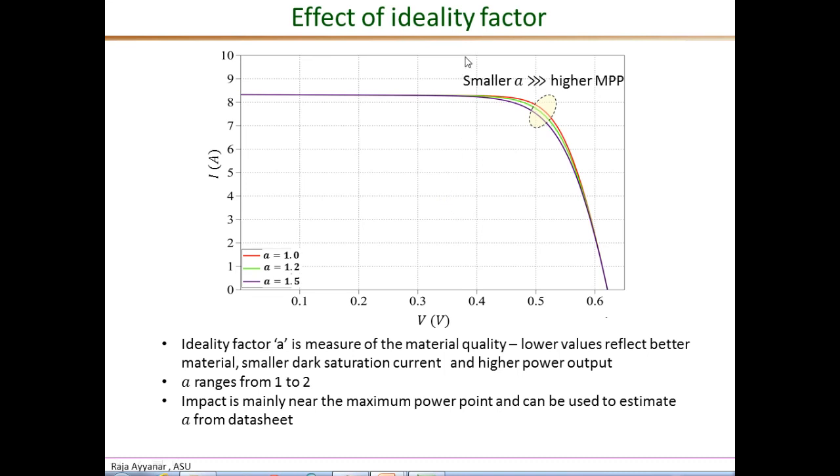The next factor to be estimated is the diode ideality factor A. Before we learn about how to estimate this, let's recap what we have learned about the factor A previously. We know that A ranges from 1 to 2. Lower the value of A, it reflects a better diode material, better semiconductor material, and it results in smaller values for the reverse saturation current I-O.